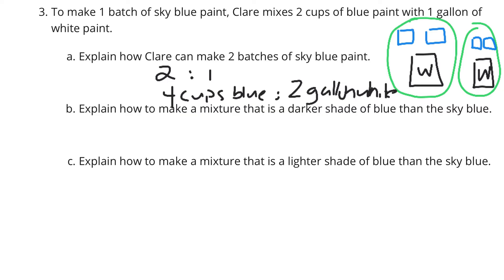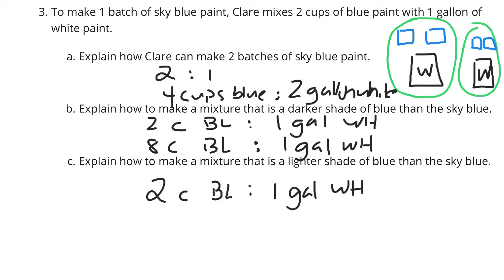Now, explain how to make a mixture that is a darker shade of blue. That's going to require us to add more blue. If we start off with two cups of blue and one gallon of white, if we keep the one gallon of white, but add to the blue, say eight cups of blue, that would create something that has more blue and a darker shade of blue. And, of course, on the flip side, a lighter shade of blue than the sky blue. If we're starting with two cups of blue and one gallon of white, we could do two things. We could just reduce the blue we have and go one blue per one gallon of white. Or, we could keep the two cups of blue, but increase our white to two gallons.